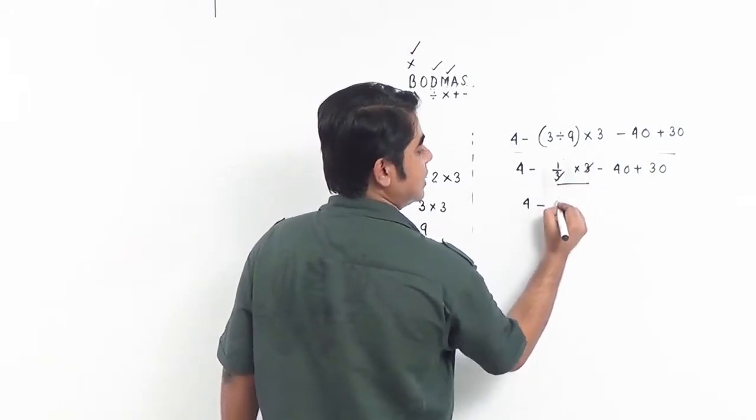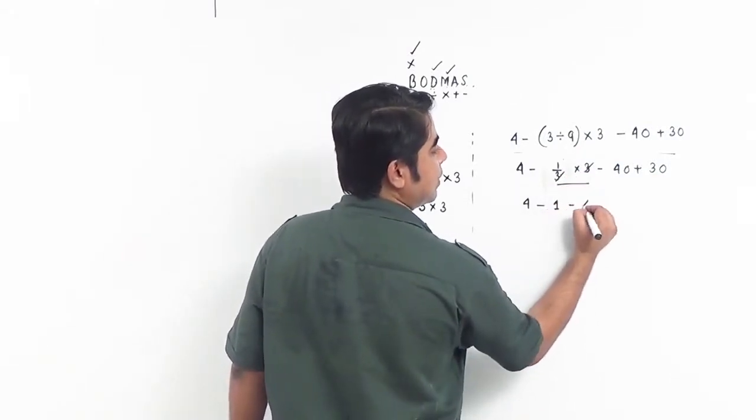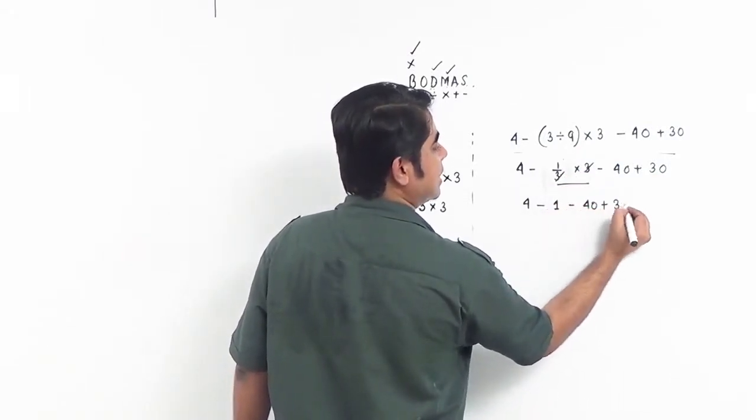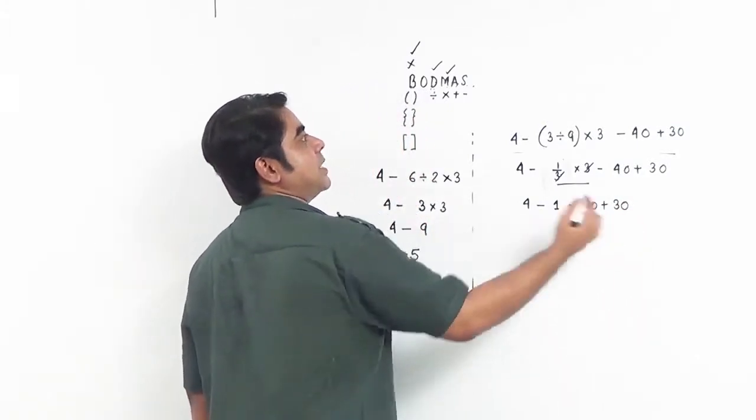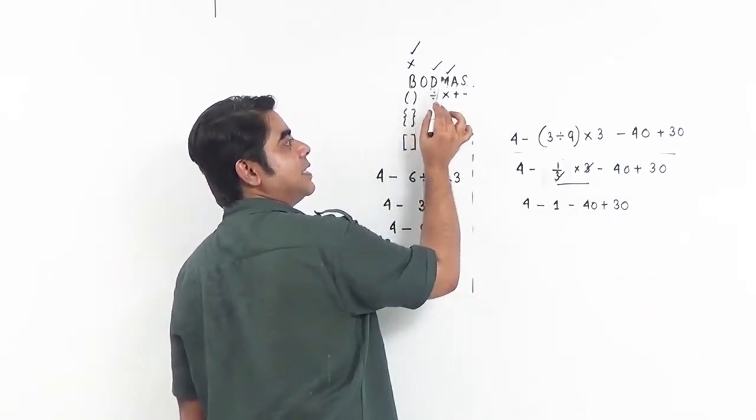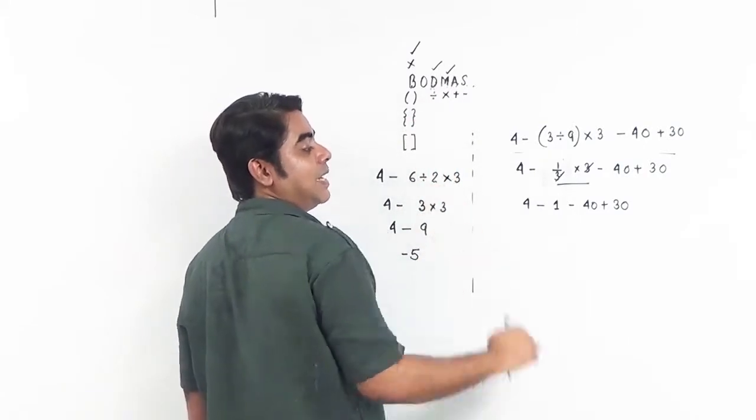1/3 into 3 cancels out. This becomes 1 minus 40 plus 30. Now we scan the expression again. We don't have a bracket, we don't have division, we don't have multiplication, but we do have additions.